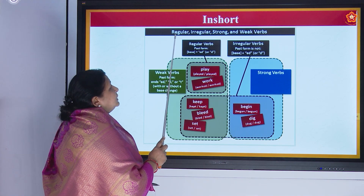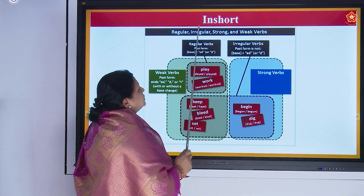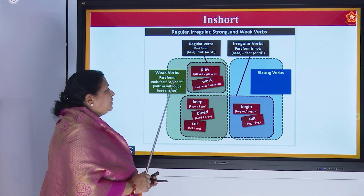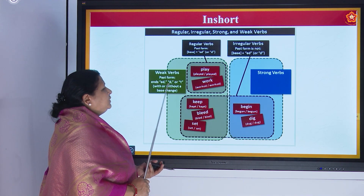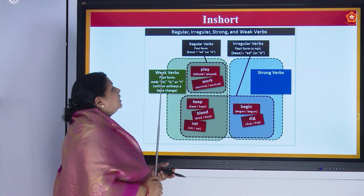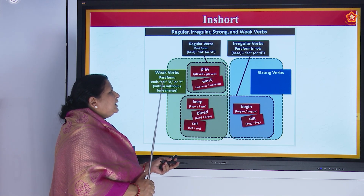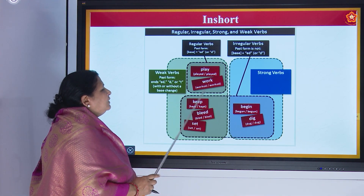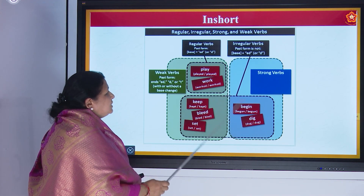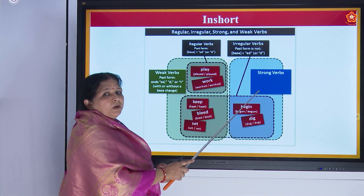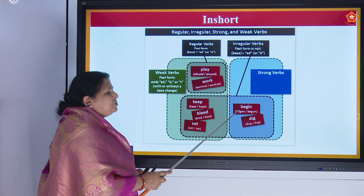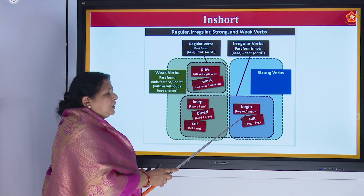Regular, irregular, strong and weak verbs. Weak verbs: past form ends with E-D, D or T — with or without a base change. Strong verbs do not end with E-D, D or T, but there will be a structural change in between — a base change. For example, begin becomes began, B-E-G-A-N, and begun, B-E-G-U-N. Dig becomes dug and dug.